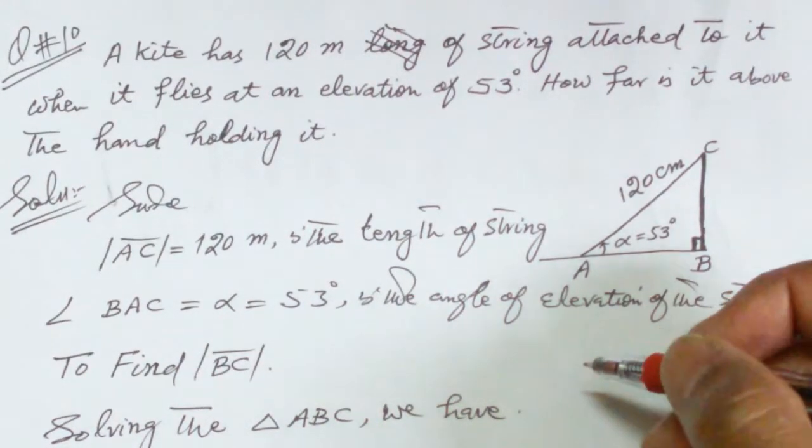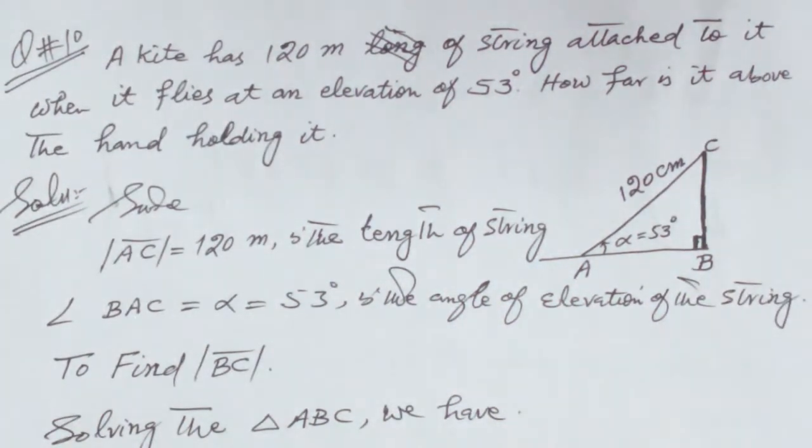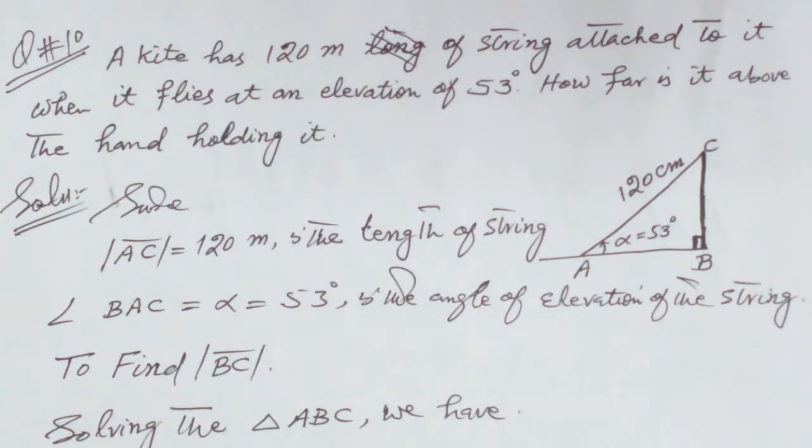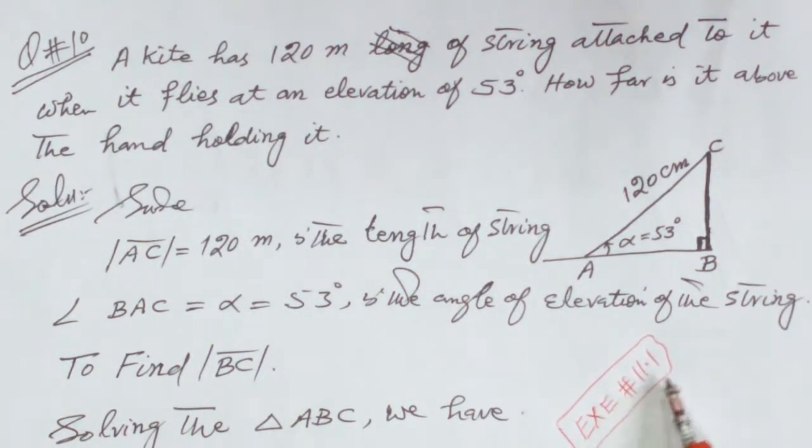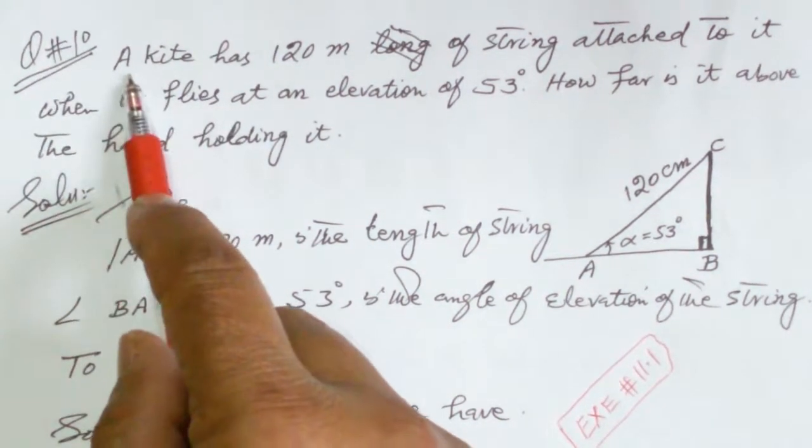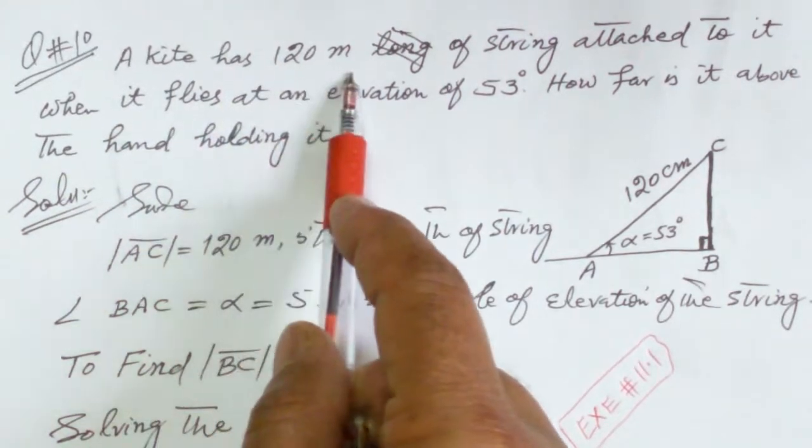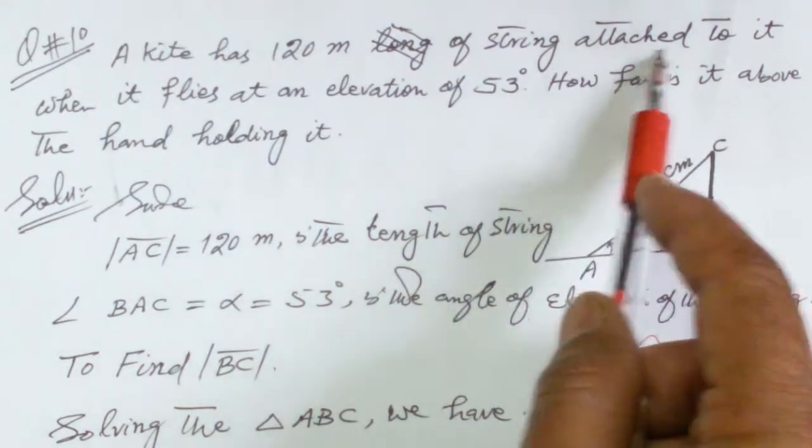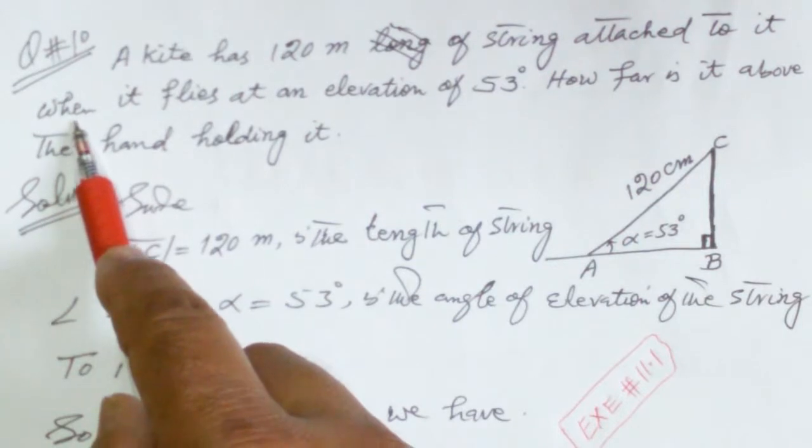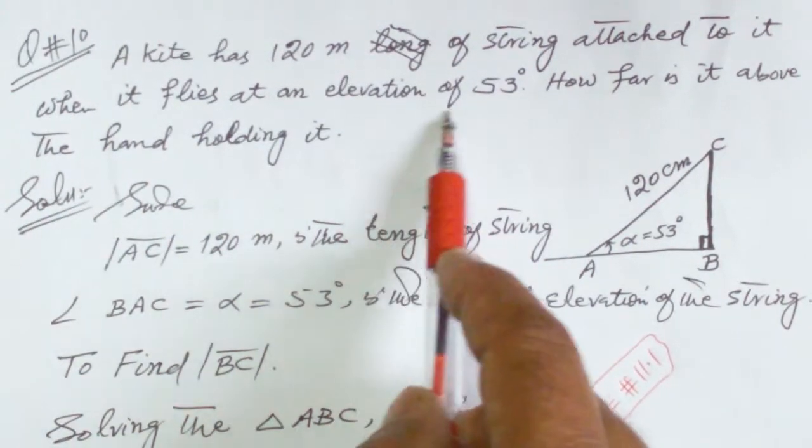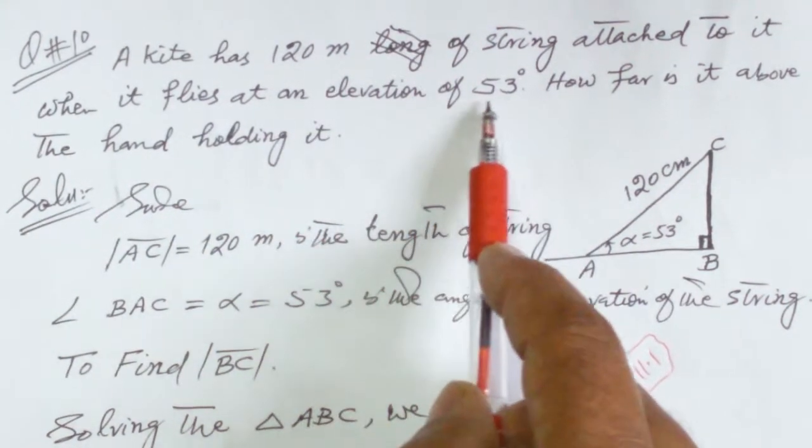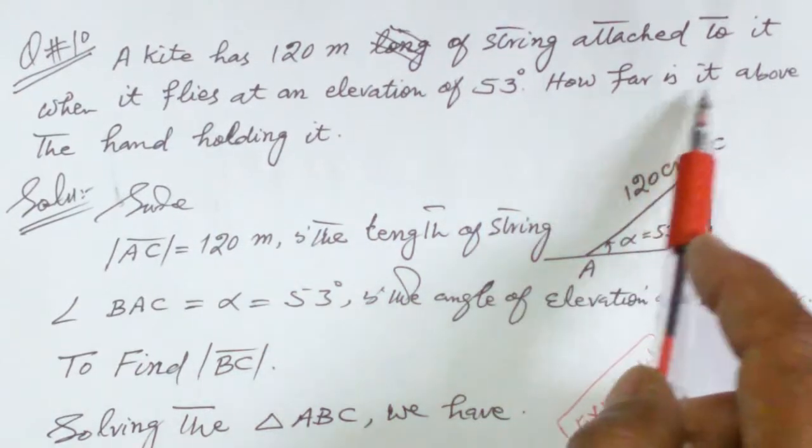Exercise 11.1, question number 10. The question is: a kite has 120 meters of string attached to it. When it flies at an elevation angle of 53 degrees, how far is it above the hand holding it?